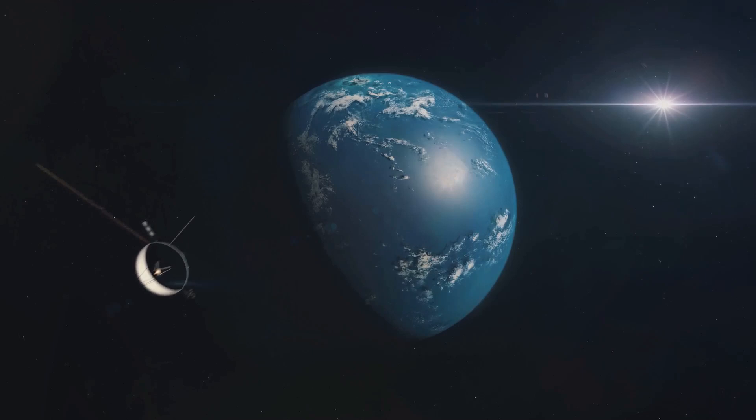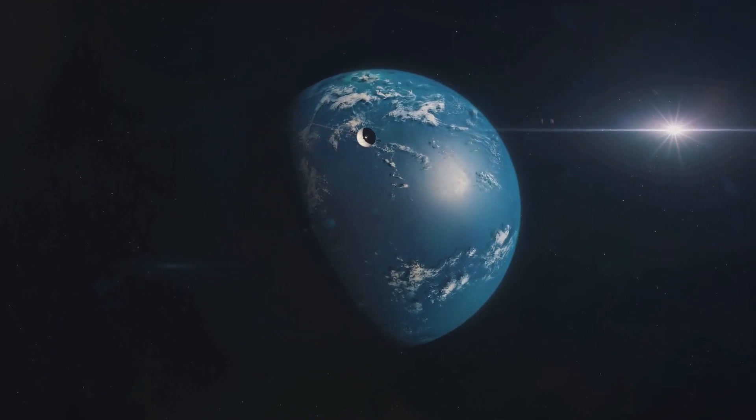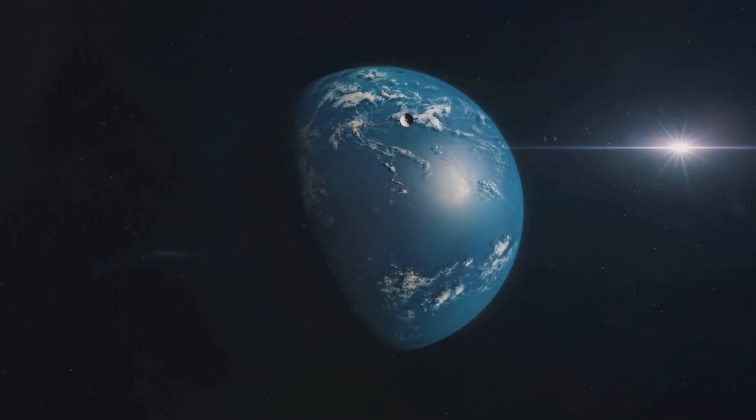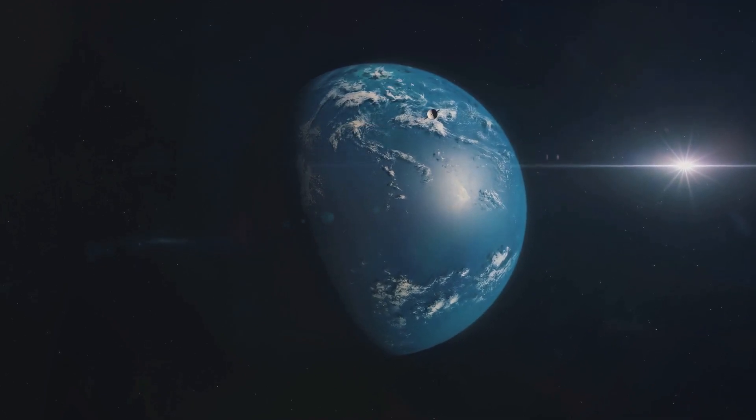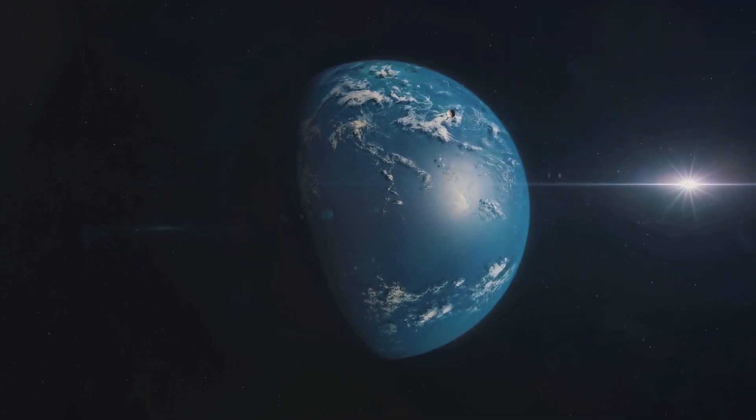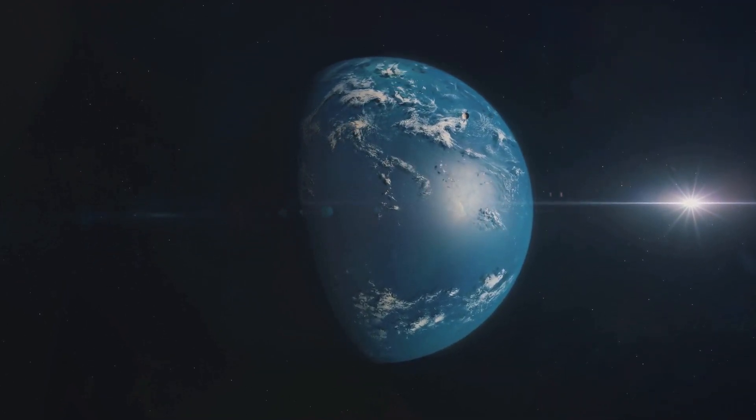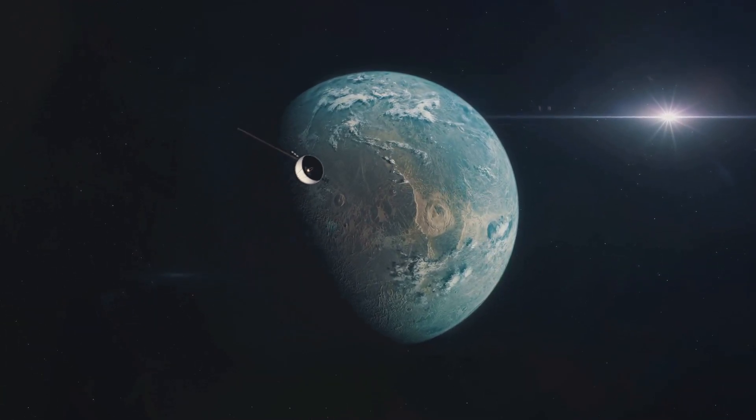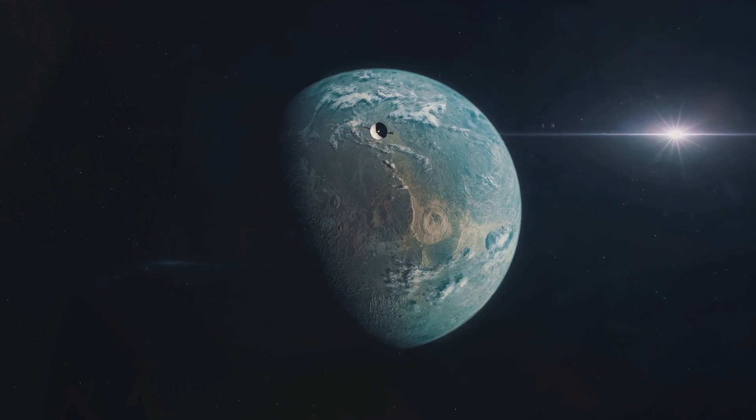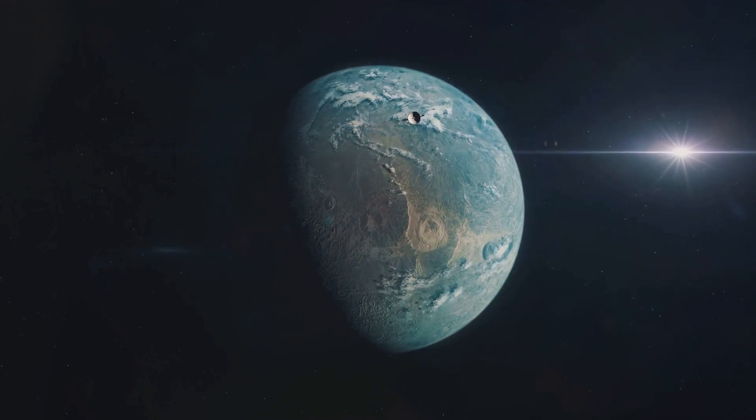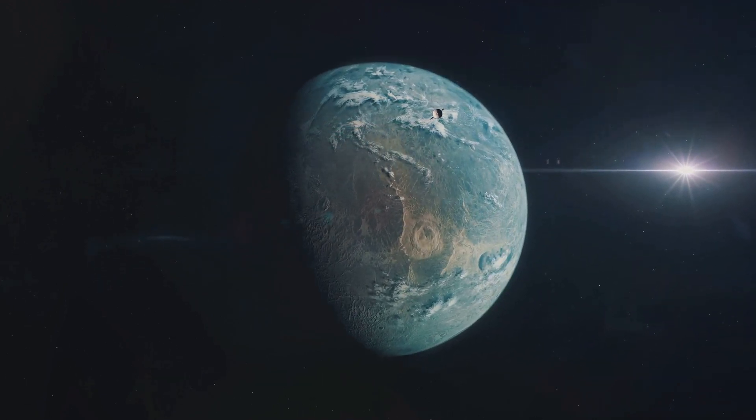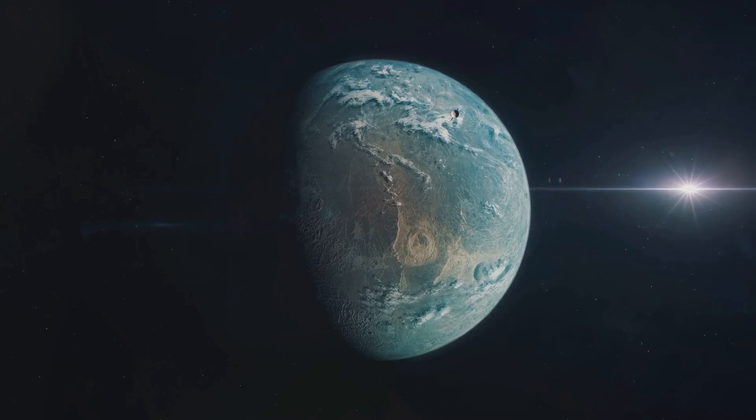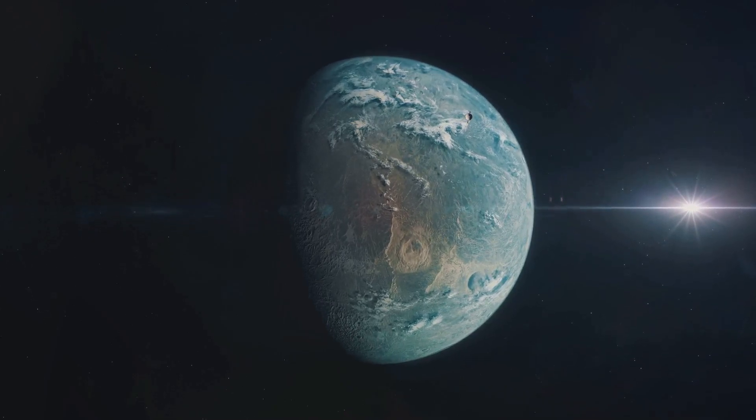Now, let's journey out a bit further to Proxima C. This planet is considerably larger, with an estimated size seven times that of Earth. Its orbit, too, is much more distant, lying at a staggering 1.5 billion kilometers from its star. This places Proxima C outside the conventional habitable zone. However, recent models have suggested that under the right conditions, this distant world might still be able to support liquid water.